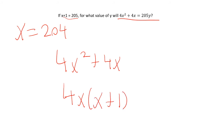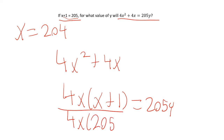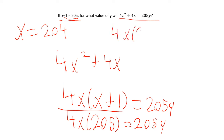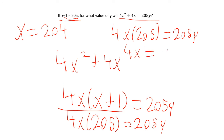Now we're left with the factored form: 4x times x plus 1. We know x is 204, and we know x plus 1 is 205. So this equals 4x times 205. We're asked for what value of y will we get that, so: 4x times 205 equals 205y, and dividing both sides by 205, we get 4x equals y.